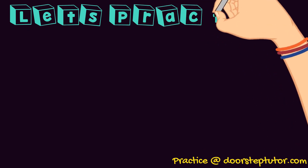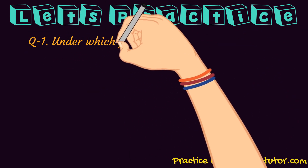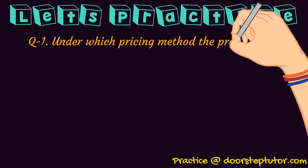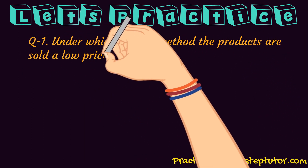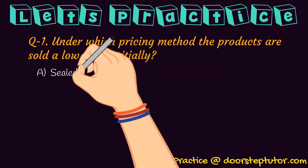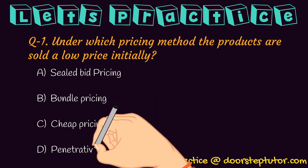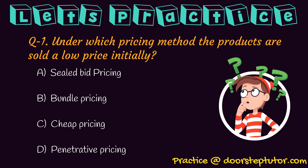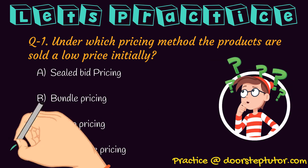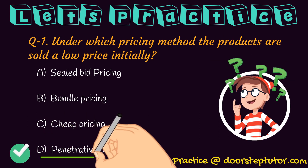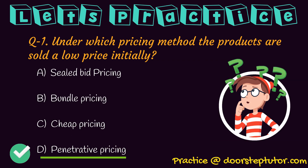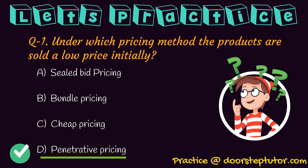Now let us practice some important questions. Under which pricing method are products sold at a low price initially? We read that whenever a new product is launched in the market and its price is kept low, we are basically following the penetrative strategy. After a certain time, the price is gradually increased. This is basically followed when a product is new in or launched in the market.